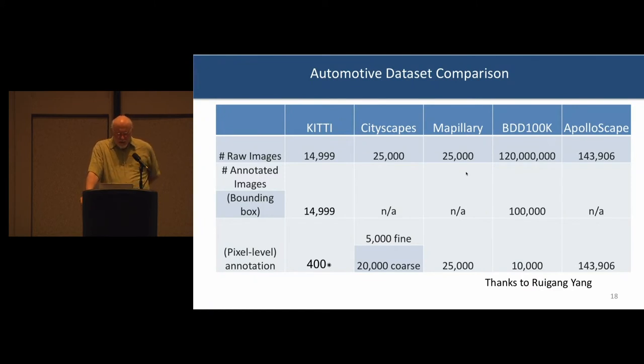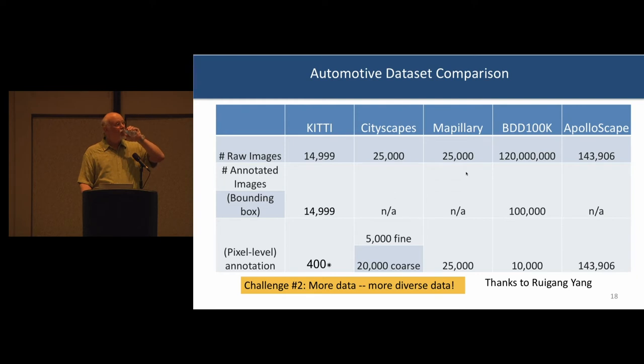The folks at Baidu have released the Apolloscape dataset, which incorporates a much wider variety of sensors and a much more of a 3D view. Looking at the BDD100K dataset, we've got 120 million images and a hundred thousand bounding boxes. But in Apolloscape, we have 143,000 images with pixel level annotation and a much better 3D view. But still, I think if we compare these to what's available commercially, what the major automotive OEMs and places like Mobileye are gathering, we're still orders of magnitude away. So challenge number two, I would say is we still need a lot more data and we need a lot more diverse data than we've seen so far.